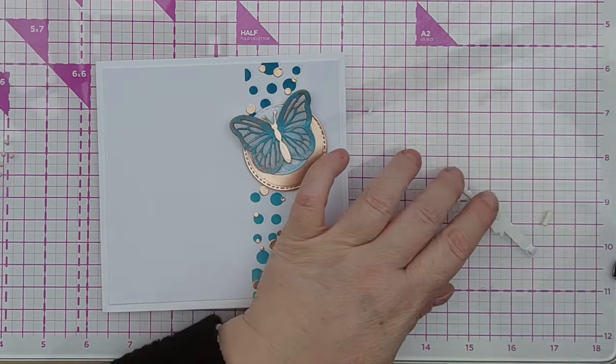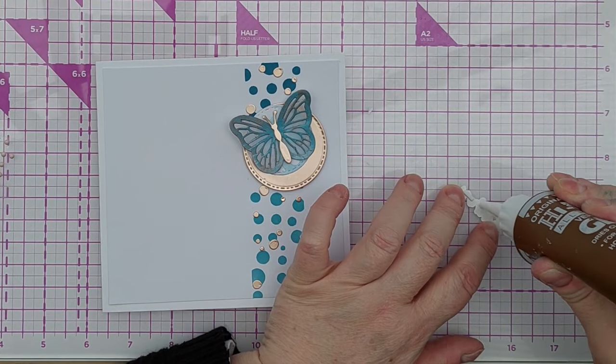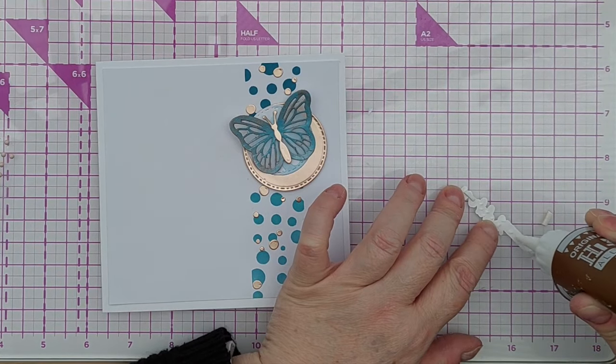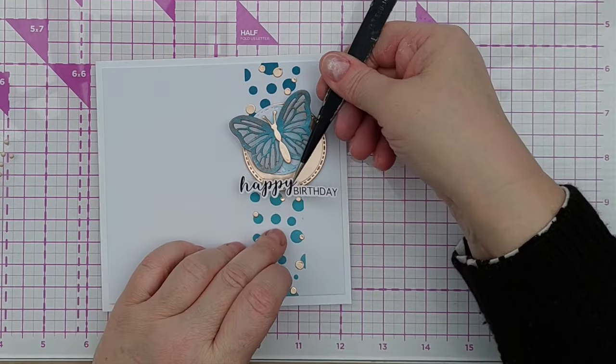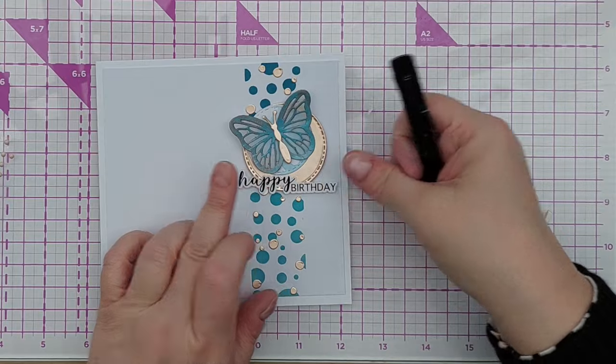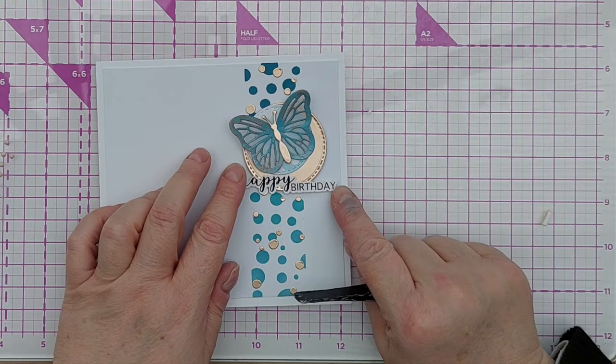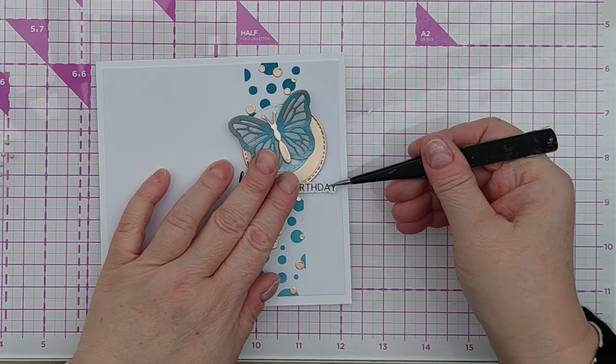For my sentiment, I chose a happy birthday from my little sentiment folder where I keep pre-stamped or pre-printed sentiments. This one was one I created in the Silhouette Studio software and printed and cut from cardstock.